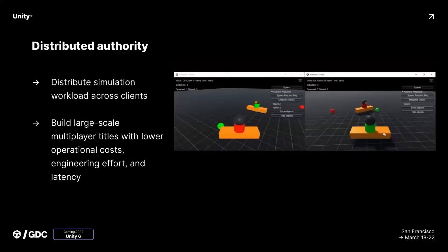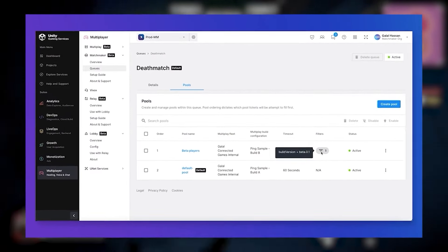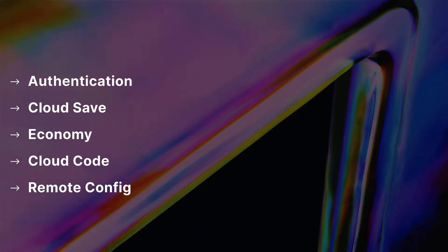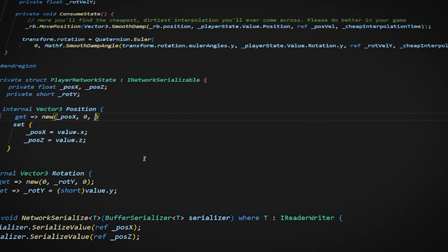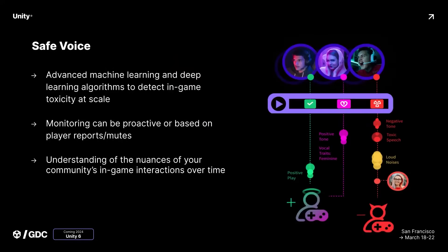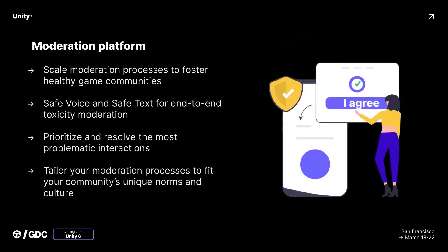They're introducing distributed authority, which reduces the workload of a server by putting that onto clients where possible to increase performance in very large worlds. They're also introducing skill-based matchmaking so you can set your own parameters — like how many wins players have or what loadouts they're using. Additionally, they're integrating moderation and safety features with safe voice, safe text, and a moderation platform to filter out toxic behavior.